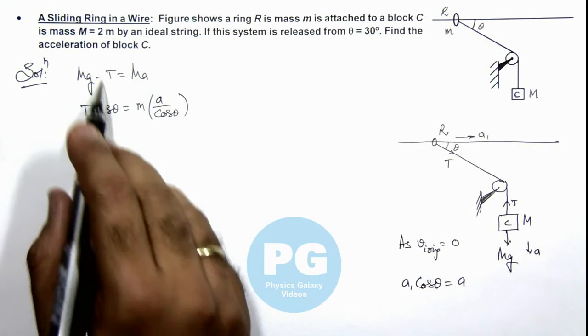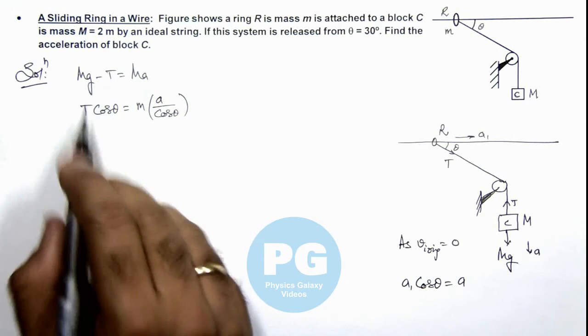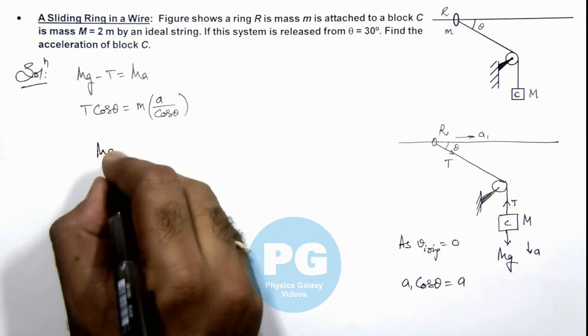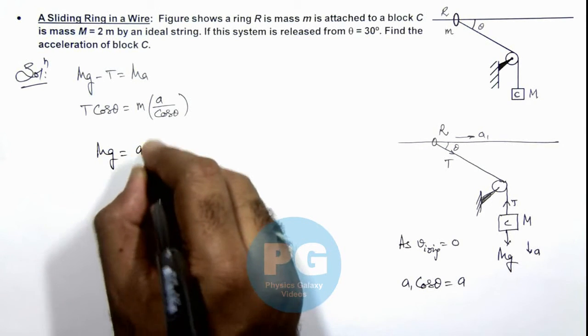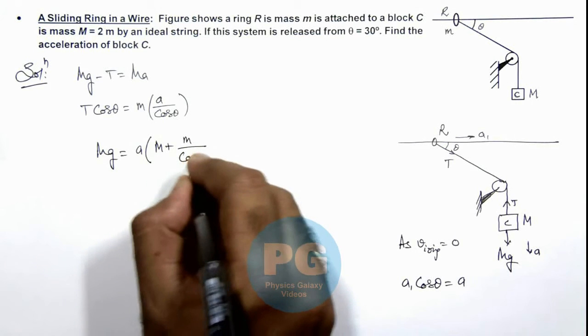From these equations if we substitute the value of T, the value we are getting is mg is equal to acceleration multiplied by m plus small m by cos square theta.